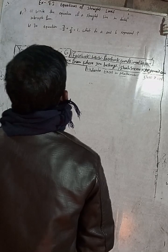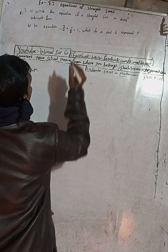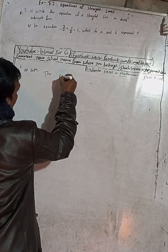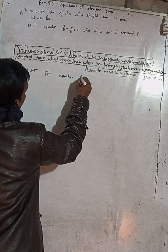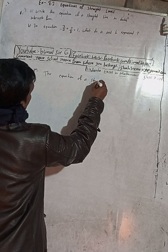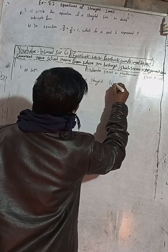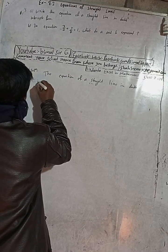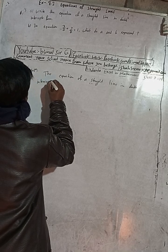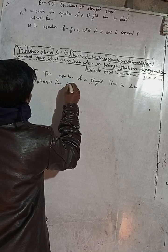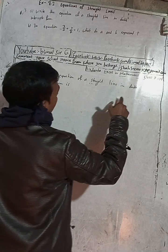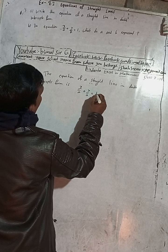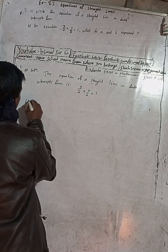We are going to write the equation of a straight line in double-intercept form. The equation of a straight line in double-intercept form is: x/a + y/b = 1.